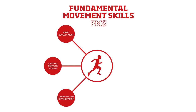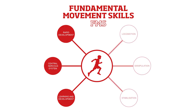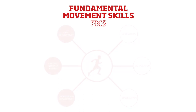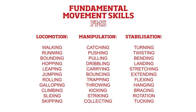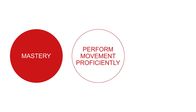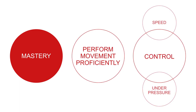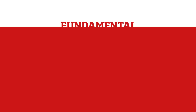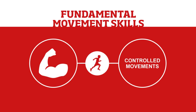Fundamental movement skills, or FMS, are a priority at an early age but less of a focus once they've been mastered. Rapid development of the central nervous system in early childhood supports the learning and development of these skills, which are related to locomotion, manipulation and stabilisation. Early mastery of fundamental movement skills lets children progress to sport-specific skills. Mastery means being able to perform movements proficiently and with control, even at speed or under pressure. Without it, children can struggle with more advanced skills. When strength is developed alongside FMS, it creates a foundation for all other forms of exercise and helps children demonstrate controlled movements.